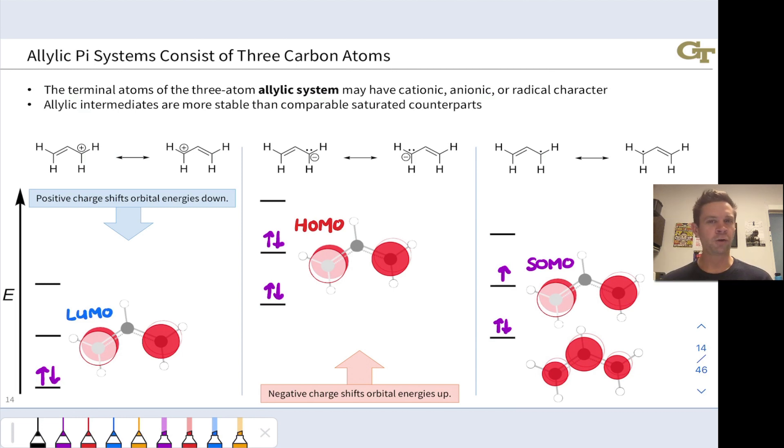Notice that in all three of these cases, the important frontier orbital has lobes only on the outer two atoms. And notice that these lobes correlate with where we find positive charge, negative charge, or radical character in the resonance forms. This is not a coincidence. This is the pi molecular orbital picture matching up with our expectations based on resonance, which is a pattern we'll see again and again as we compare pi molecular orbitals with resonance structures.